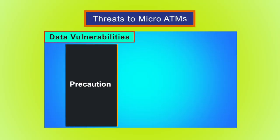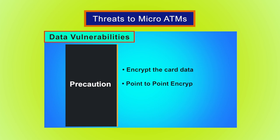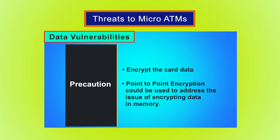The way to minimize this risk is by encrypting the card data as soon as possible and keeping it encrypted to the maximum extent throughout its life within the system. Point-to-point encryption could be used to address the issue of encrypting data in memory.